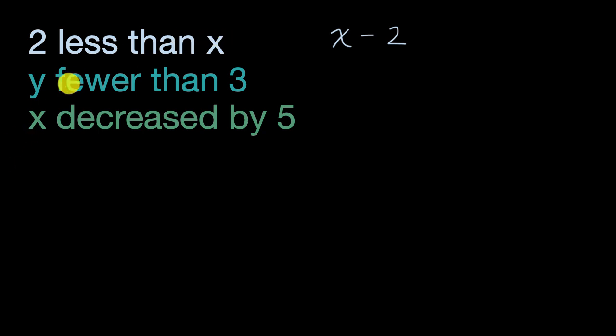Now this next statement, y fewer than three. Well, in my mind, I'm going to start with three and I'm going to be y fewer than that. So I'm going to start with three and then I'm going to be y fewer than that. Now these first two statements are similar in that you have something less than something else or something fewer than something else. They just swapped the number and the variable.